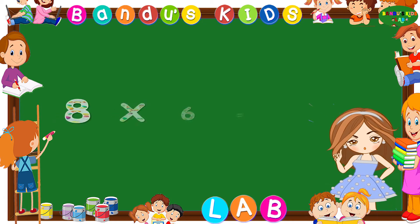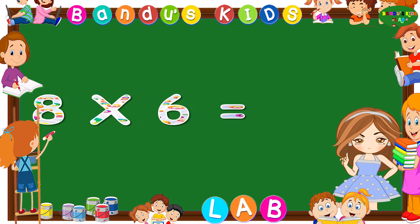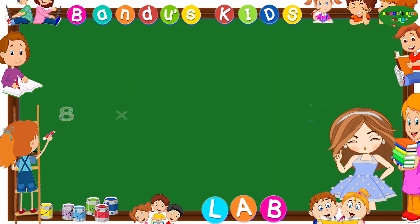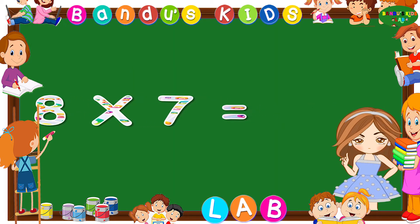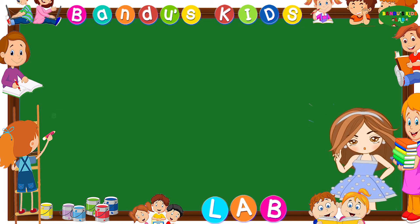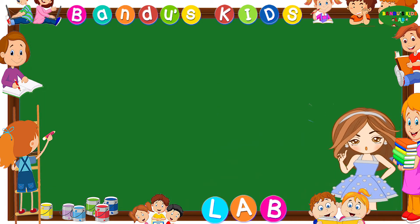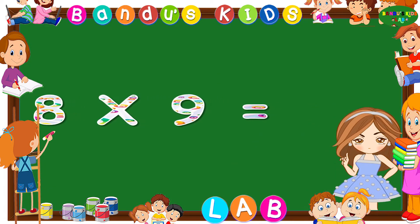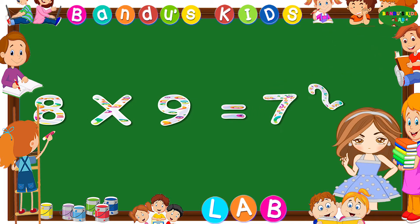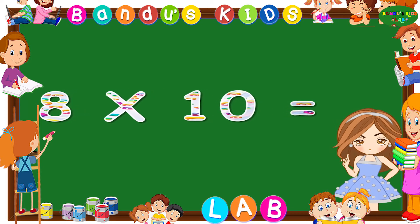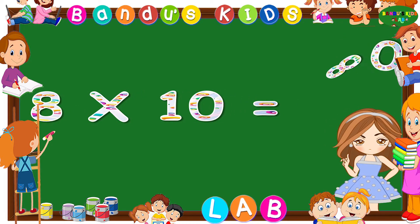Eight sixes are 48. Eight sevens are 56. Eight eights are 64. Eight nines are 72. Eight tens are 80.